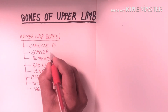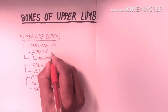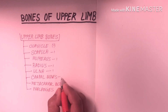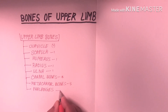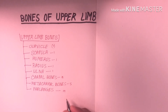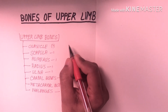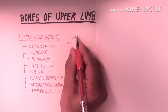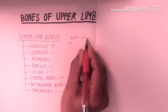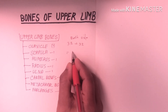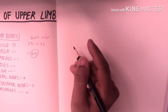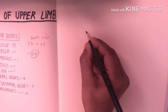So each side we have one clavicle, one scapula, one humerus, one radius, one ulna, eight carpal bones, five metacarpal bones, and 14 phalanges. So each side we have 32 bones, and both sides we have a total of 64 bones. So in the upper limb we have a total of 64 bones. Now I will make a diagram.